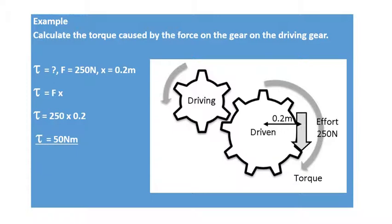In this first instance, we're going to calculate the torque, like we just did previously for the pulleys. We've got 250 newtons of effort. We've got a distance of 0.2 to the pivot point. So the torque is force times distance, 250 times 0.2 gives me 50 newton metres.